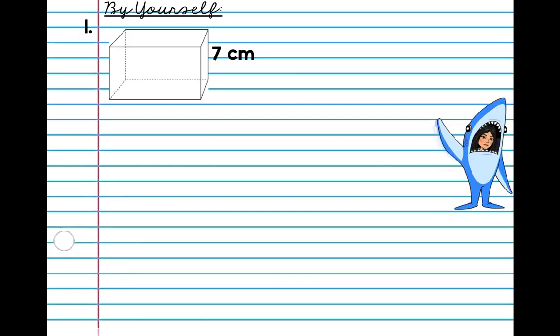So you guys can go ahead and try this by yourself. Make sure you have it in your notebook. And press pause and make sure you use your formula. Okay, so we have 12 centimeters times 6 times 7 centimeters that equals 504 centimeters cubed.